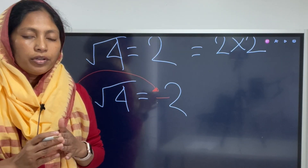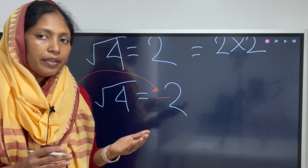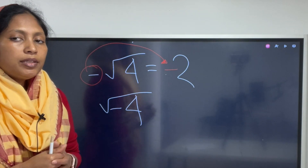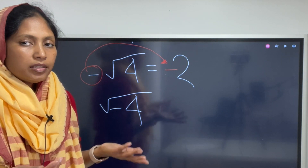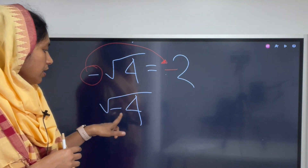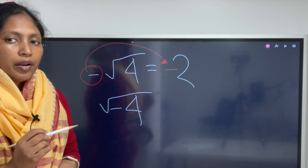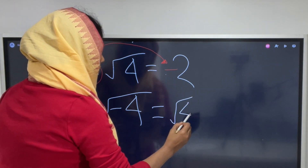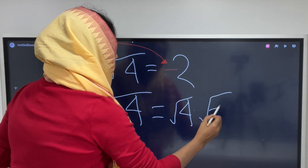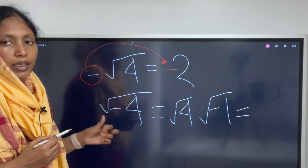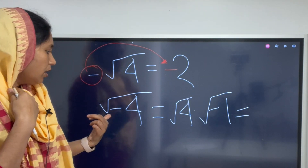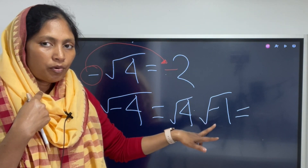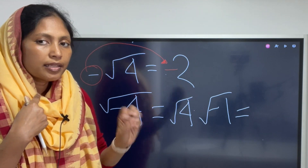Now let's check what happens if the negative sign is inside the square root. If the negative sign is inside, you have to multiply by an imaginary number. The imaginary number means when you see a negative sign inside, you need to multiply it by square root of negative 1. So we get: square root of 4 times square root of negative 1. The symbol for square root of negative 1 is i.